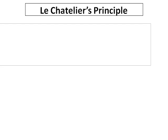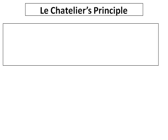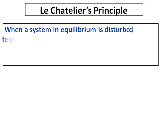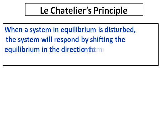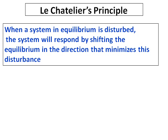Continuing with chemical equilibrium, we will learn what Le Chatelier's principle is. The definition of Le Chatelier's principle is: when a system at equilibrium is disturbed, the system will respond by shifting the equilibrium in the direction that minimizes this disturbance.